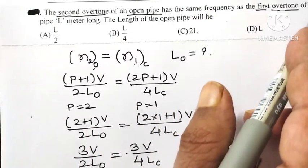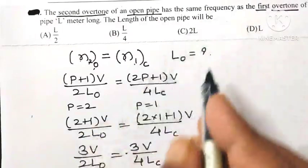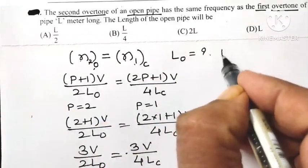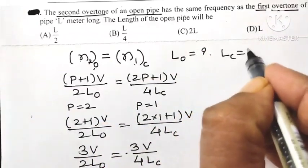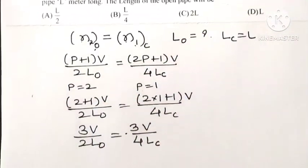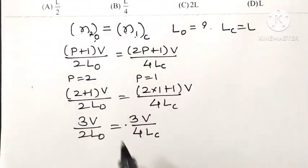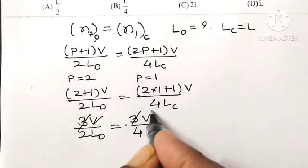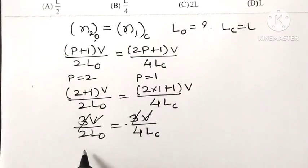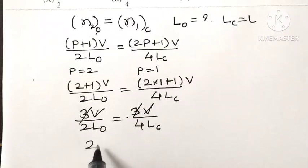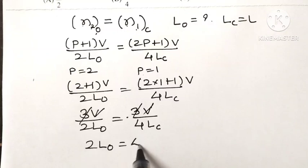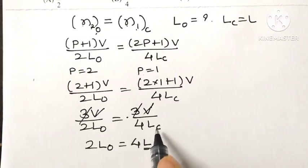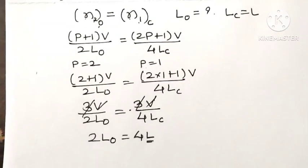And see here, the length of the closed pipe is given as Lc equal to L. Now, 3 and v on both sides get cancelled. Therefore, 2 times the length of the open pipe equals 4 times L, because the length of the closed pipe is L.